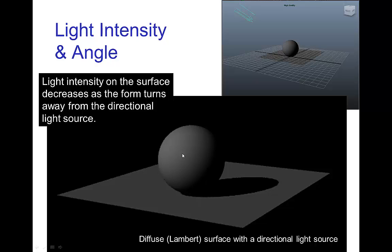And as we turn and go towards the back, the light is getting dimmer and dimmer as it is spreading over the area which is turning away from the source. And then behind the sphere, no light is reaching that part.